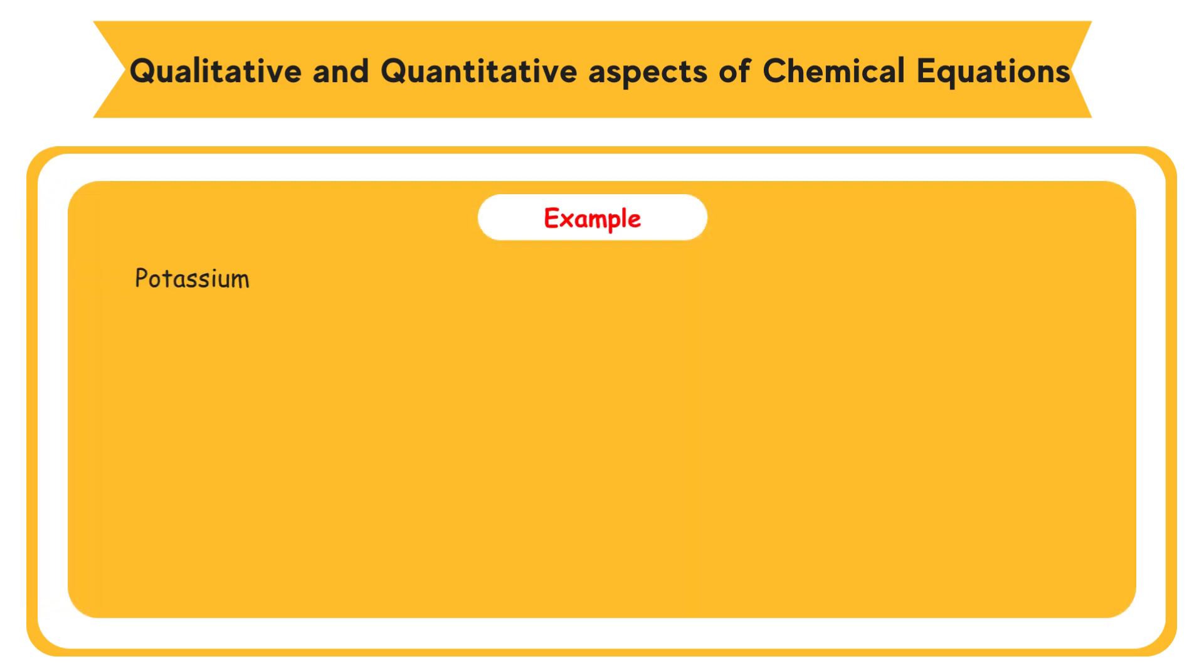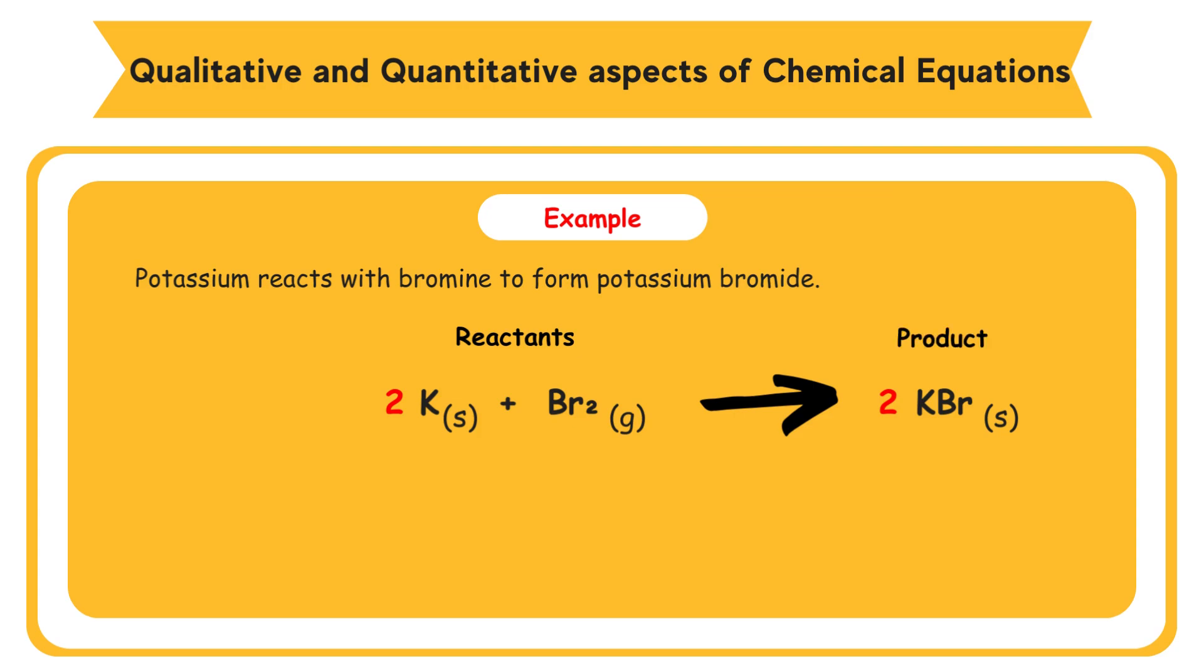Example: Potassium reacts with bromine to form potassium bromide. The equation is as shown. Reactants are solid potassium and bromine gas. The product is potassium bromide solid.